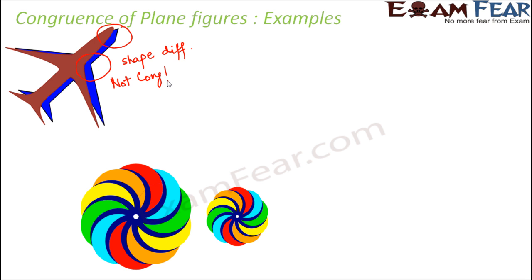Look at this one — you have two colourful circular shapes. Are they congruent? No, they are not congruent because they are of different size, and as we have learned we cannot stretch them to alter their size. Their sizes are different, therefore they are not congruent.